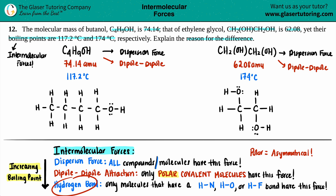But the last intermolecular force is the most specific, which is the hydrogen bond. Only molecules that have a hydrogen bound to nitrogen, oxygen, or fluorine will be able to hydrogen bond. If I look at butanol, I do notice that I have a hydrogen attached to an oxygen. So this part of the molecule can hydrogen bond. All the other hydrogens bound to the carbons do not have hydrogen bonding because they don't fall into the category of H-N, H-O, and H-F.